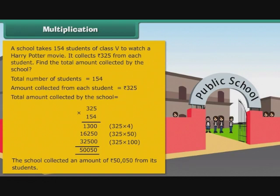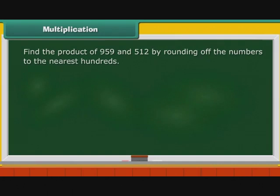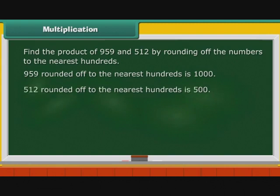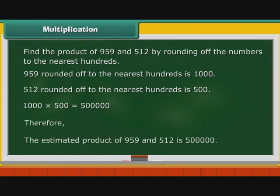Now let us estimate the product of two numbers. Find the product of 959 and 512 by rounding off the numbers to the nearest 100s. 959 rounded off to the nearest 100s is 1000. 512 rounded off to the nearest 100s is 500. 1000 × 500 = 500000. Therefore, the estimated product of 959 and 512 is 500000.